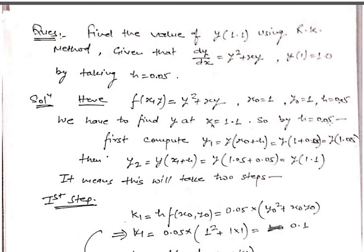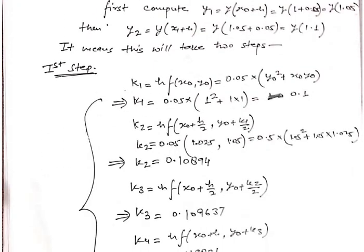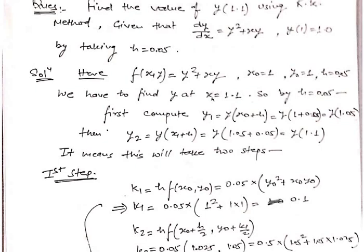Dividing into 2 intervals means we follow 2 successive approximations. x₁ = x₀ + H = 1 + 0.05 = 1.05, so y₁ = y at 1.05. Then x₂ = x₁ + H = 1.05 + 0.05 = 1.1, so y₂ = y at 1.1 — that is our required answer. Since we divided into 2 intervals, the second approximation y₂ will be the final answer.